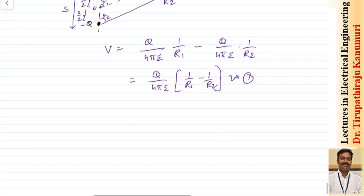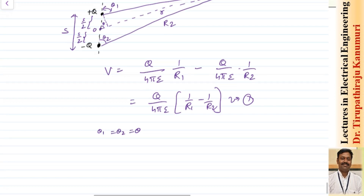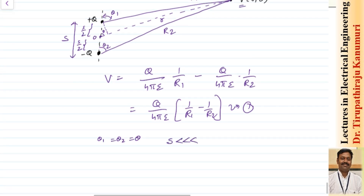So now as point P is very far, we can assume the angle theta 1 is equal to theta 2 is equal to theta, because the value of S is far less than the value of the radius or the distance we are taking. So the angle difference will be very less. So we can write the value of R1: R1 is equal to R minus S by 2 into cos theta.